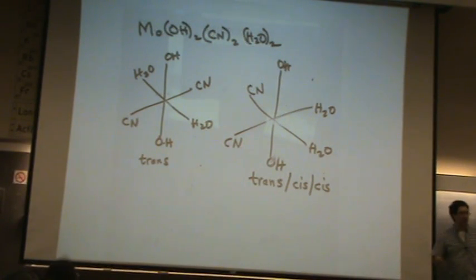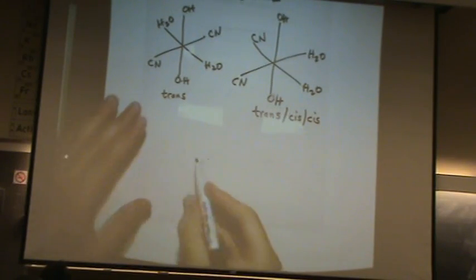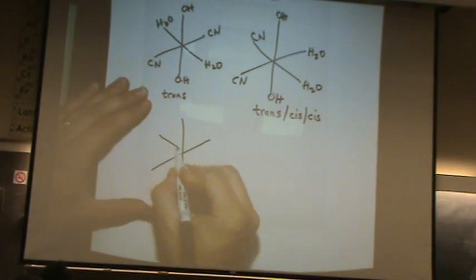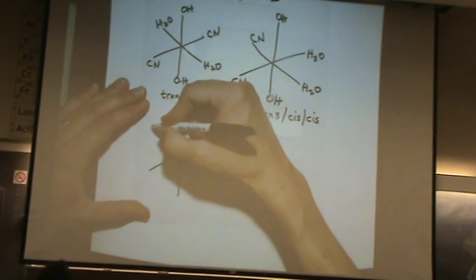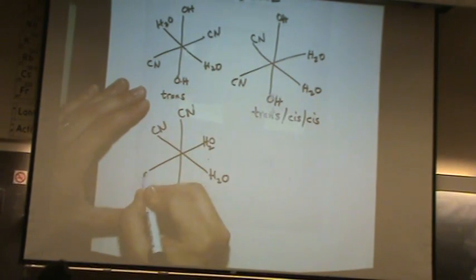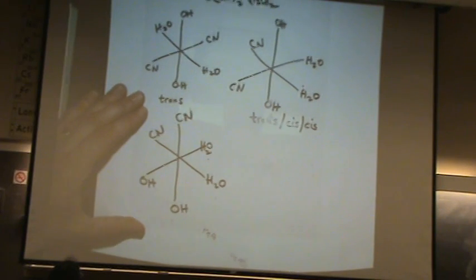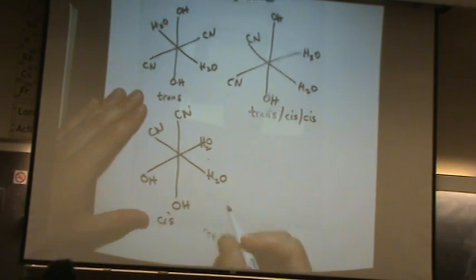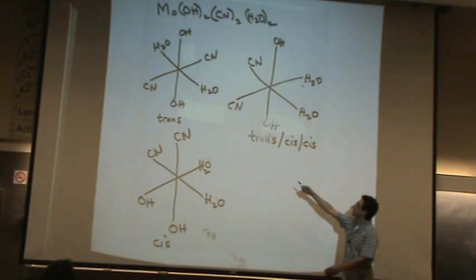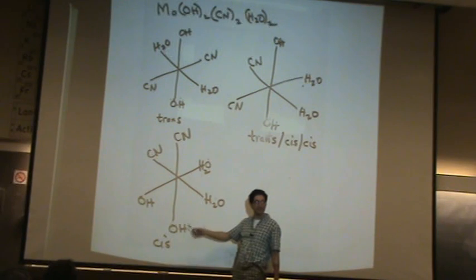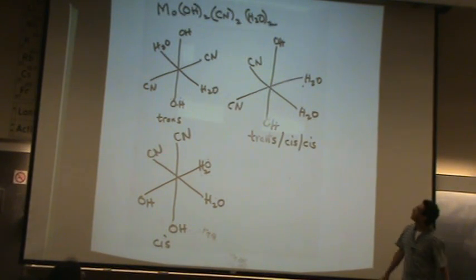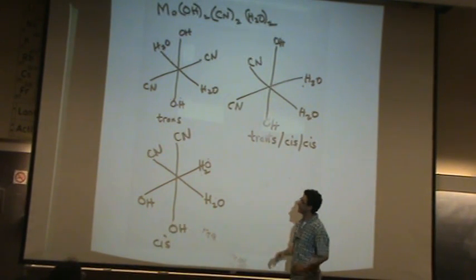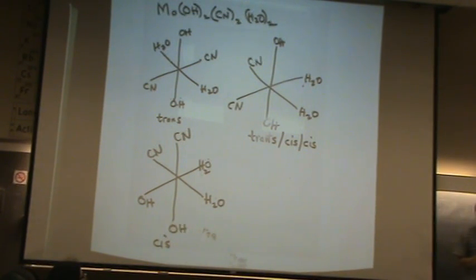Now I'm going to make my way to everything being cis. I'll just put water here, CN here and here, and OH here and here. Again, molybdenum's still in the middle. Now everything is cis. The first one was three transes, all trans, trans, trans. This is cis, cis, and cis. Everything is cis, meaning nothing is on the same axis. Whereas before we had at least one thing, the hydroxide, on the same axis. Those are all the geometric isomers.